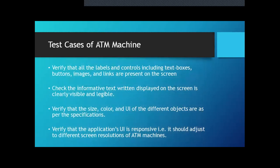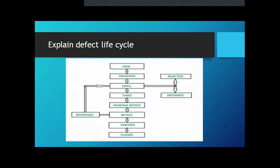In manual testing, one question asked was: explain the defect life cycle. When you create a defect, the status is 'New'. After assigning it to a developer, the status becomes 'Assigned', then 'Open'. From Open, it can either be 'Rejected' by the developer if it doesn't meet requirements, or 'Deferred'. If the developer fixes it, the status changes to 'Fixed', followed by unit testing and then retesting. In retesting, if it works fine it moves to 'Verified' and finally 'Closed'; if not, it is 'Reopened'.